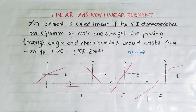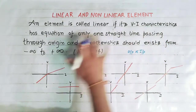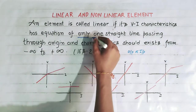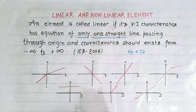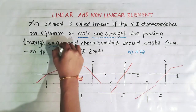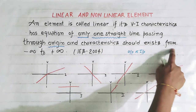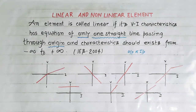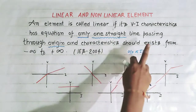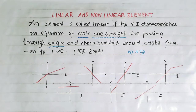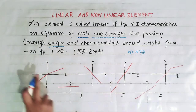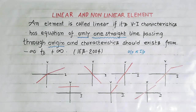Suppose the V-I characteristic of an element or circuit is given and you have to find whether it is linear or nonlinear. An element is called linear if its V-I characteristic has the equation of only one straight line — please emphasize on this — only one straight line passing through origin, and the characteristic should exist from minus infinity to plus infinity.